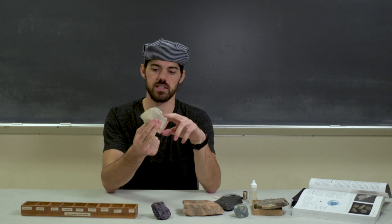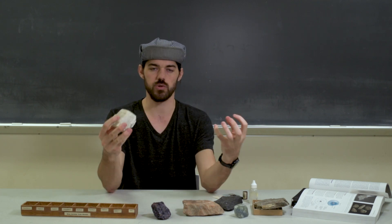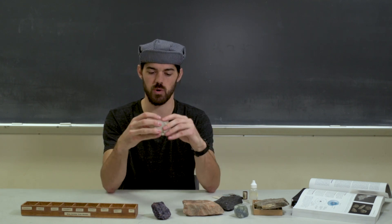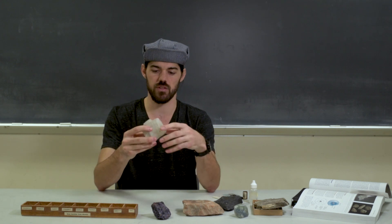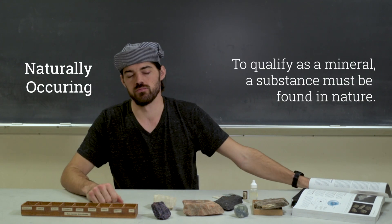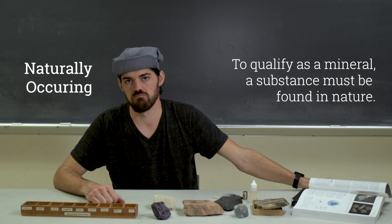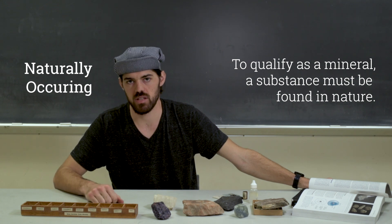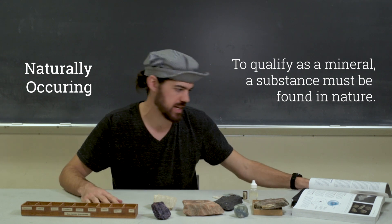If I break this calcite crystal down, it's going to then be two calcite crystals, but we're not going to get anything out of it. Homogenous, naturally occurring — I think you know what that means. Occurs in nature, not man-made. That was pretty self-explanatory.